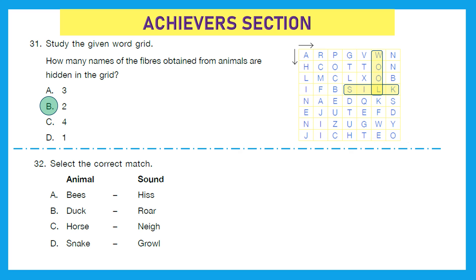Question 32: Select the correct match. Now, here one side it is animal and the other side it is animal sound. And we have to find which match is correct. Option A: Bee is hiss. No. That is incorrect because bee is buzz. B: Duck roar. Not at all. It is also incorrect because duck quacks. Option C: Horse neigh. That's right. This is the correct one. And the last one is snake growl. That is incorrect because snakes hiss. So, the correct match is option C, horse neighs.